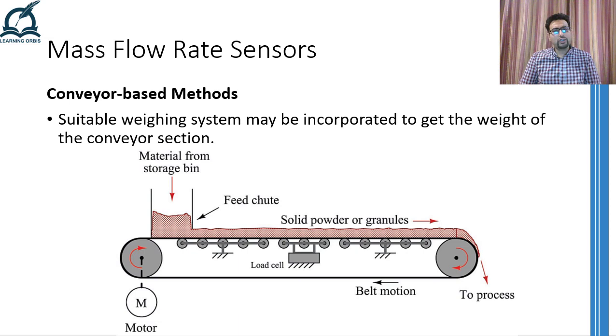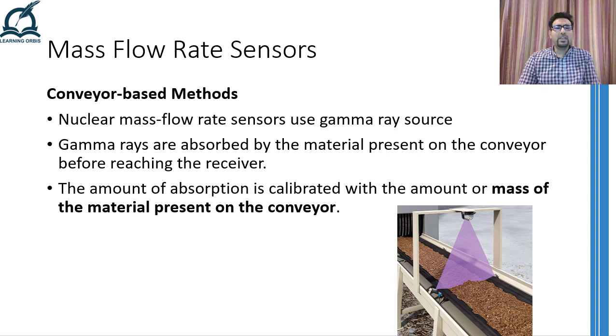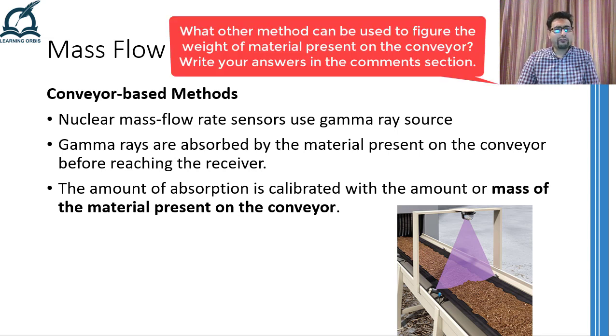This schematic over here shows the working principle which I have just described. Different kind of weighing systems can be used to measure the weight of a particular section of a conveyor. And you can use the formula that was given in the previous slide to figure out the mass flow rate. If for some reasons weighing cannot be incorporated under the conveyor, then other kind of non-invasive and contactless methods for approximating the weight of the material present on the conveyor may be implemented.